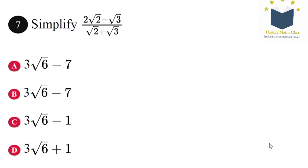Question 7. Simplify 2√2 minus √3 over √2 plus √3.